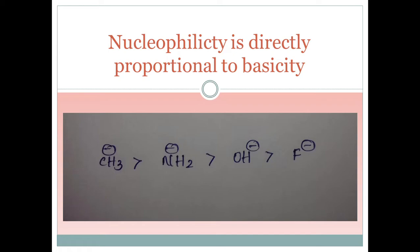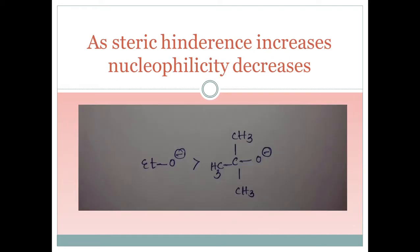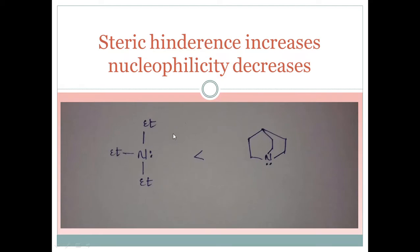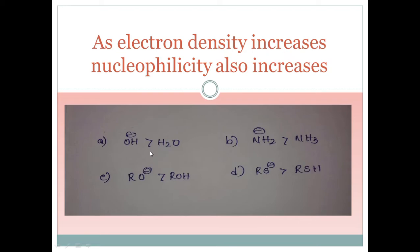Now, steric hindrance decreases nucleophilicity. If there is steric hindrance, it will decrease nucleophilicity. A less hindered species is a better nucleophile. If steric hindrance increases, nucleophilicity decreases. The least hindered species is best because it is not stuck with bulky groups and can give electrons easily compared to a sterically hindered one.